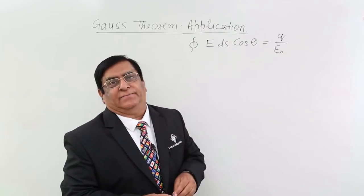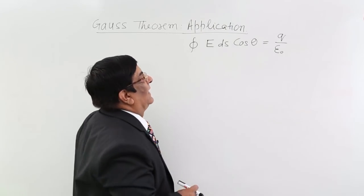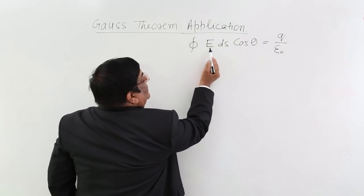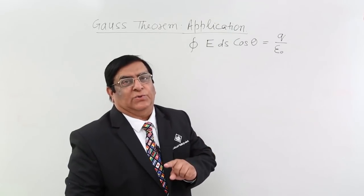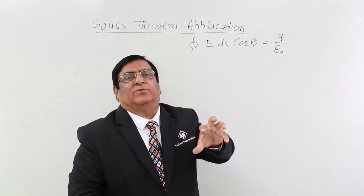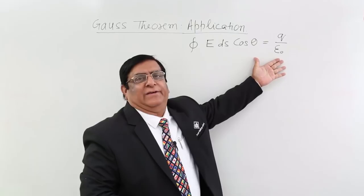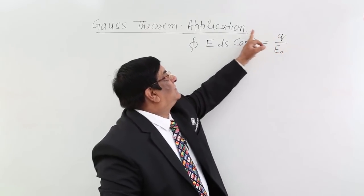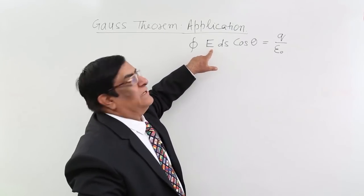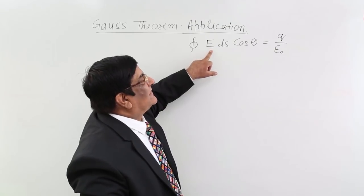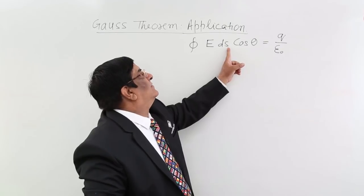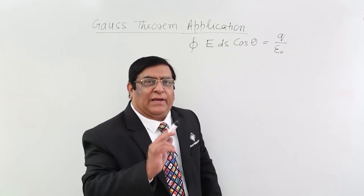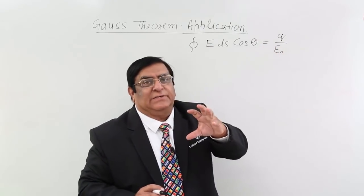The first thing is where to apply and why to apply. Gauss theorem involves certain quantities: charge, epsilon 0, theta, ds (area), and electric field. In any equation of mathematics, we can always find out one quantity if the other quantities are given. Here, 1 upon epsilon 0 is known, and we can use this formula to find out the electric field. We apply Gauss theorem to find out the electric field for different charge distributions.